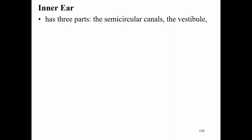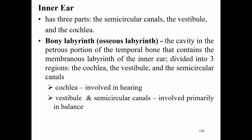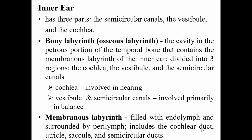The inner ear has three parts: the semicircular canals, the vestibule, and the cochlea. The bony labyrinth is the cavity in the petrous portion of the temporal bone containing the membranous labyrinth. The cochlea is involved in hearing; the vestibule and semicircular canals are primarily involved in balance. The membranous labyrinth is filled with endolymph and surrounded by perilymph, and includes the cochlear duct, utricle, saccule, and semicircular ducts.